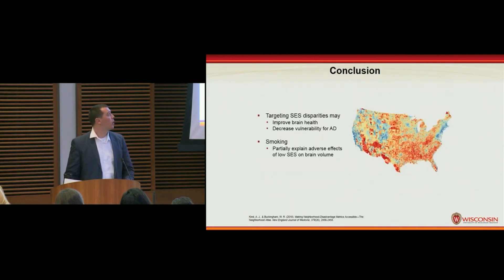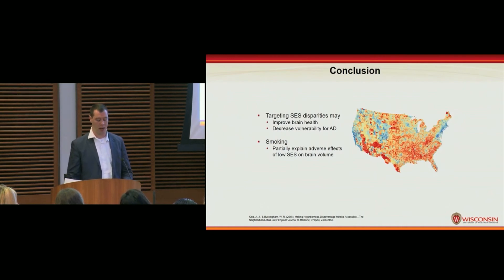In conclusion, targeting SES disparities may improve brain health and decrease vulnerability for Alzheimer's disease. Notably, within our sample, smoking partially explained the adverse effects of low SES on brain volume, which would suggest that targeting lifestyle factors such as smoking may be a promising means to mitigate some of the SES disparities on brain health.